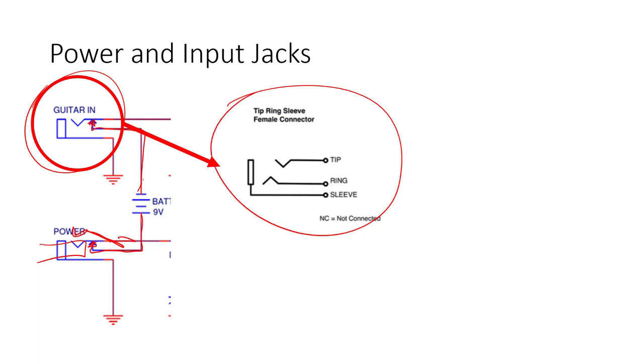The input jack actually looks more like this for the phono plug input coming from the guitar. When the negative end of the battery is connected to the ring, and a plug is inserted, there's a short formed between the ring and the sleeve. As you can see here, the sleeve is grounded, meaning that the negative end of the battery is not actually connected to ground and powering the circuit unless a plug is inserted.